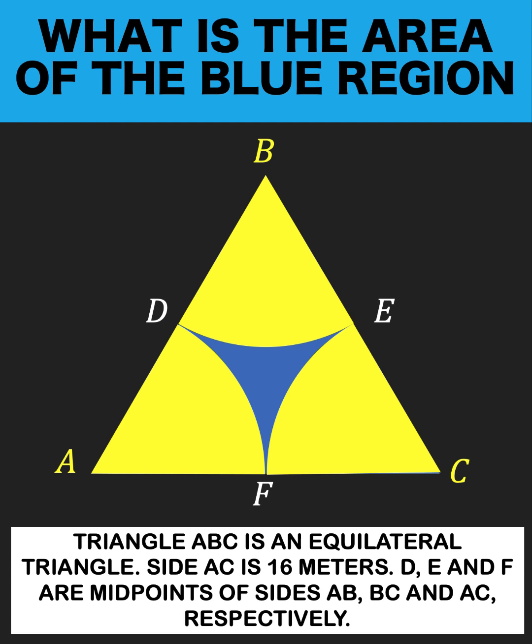Now, let's solve this problem together. Since we know that D, E, and F are midpoints of the sides of equilateral triangle ABC, where the length of the side is 16 meters,